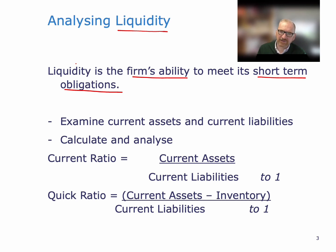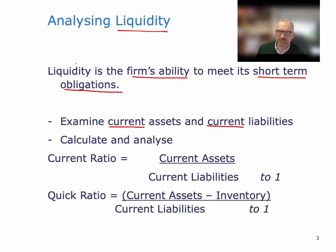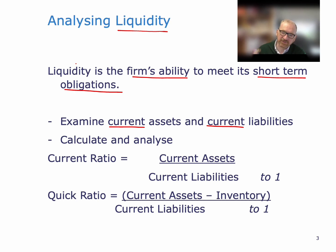So how do we assess liquidity for any individual firm? We really need to do this on the individual firm level and worry about the individual firm's position. Well, we examine current assets and current liabilities. We don't worry too much about non-current assets and non-current liabilities because those are economic benefits or obligations over the longer term. We're interested in the shorter term, which means we're looking at current.